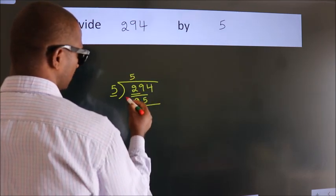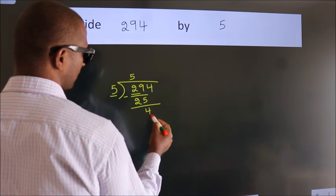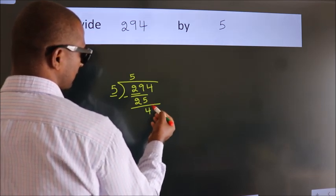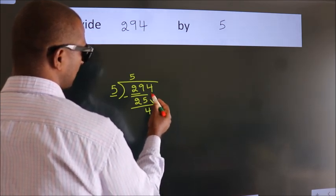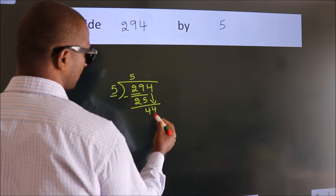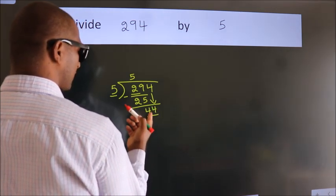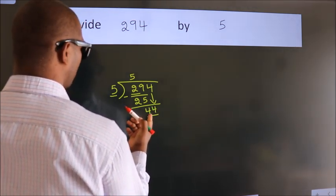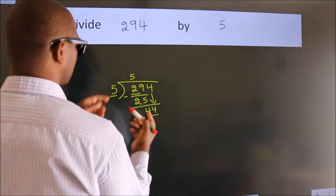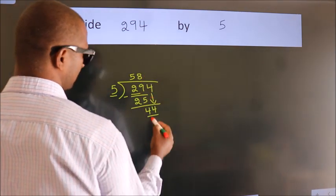Now we should subtract. We get 4. After this, bring down the beside number. So 4 down. So 44. A number close to 44 in the 5 table is 5 eights, 40.